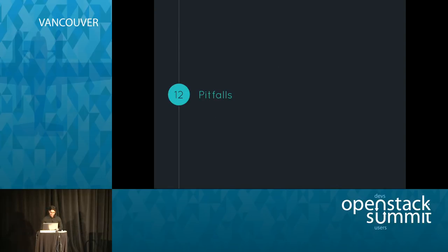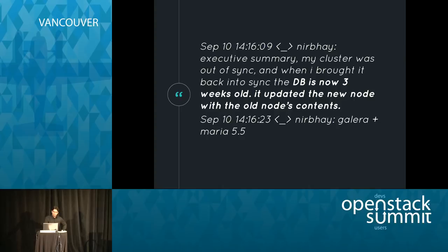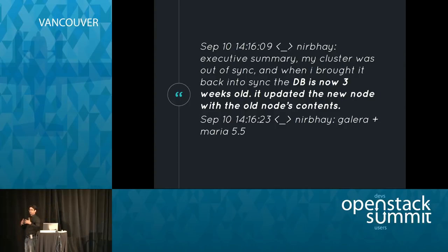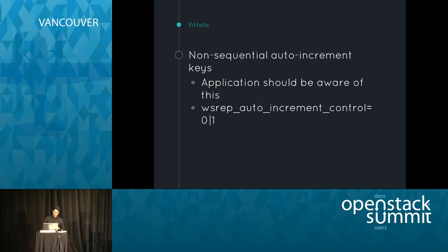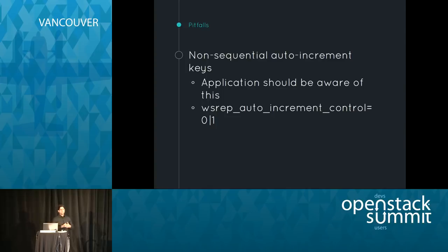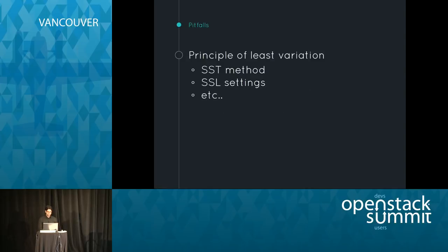Pitfalls to watch out for: when a new node joins, it inherits data from the cluster. If that joiner node has more recent information than the cluster, it will lose that information when joining — don't do that. Applications should also be aware that auto-increments are non-sequential across nodes to avoid conflicts, so your application should not expect sequential auto-increments. This is controlled by the auto_increment_offset variable. And follow the principle of least variation: keep configuration as consistent as possible across all nodes.